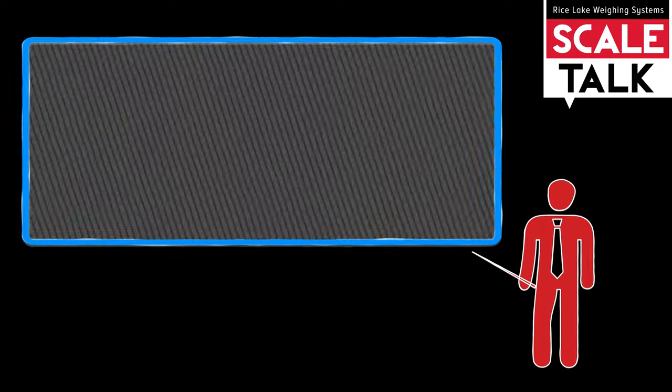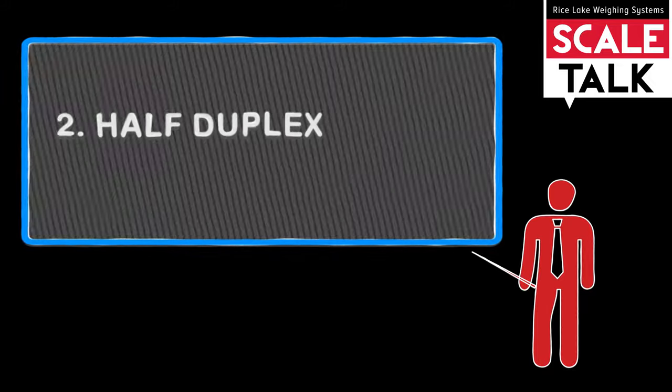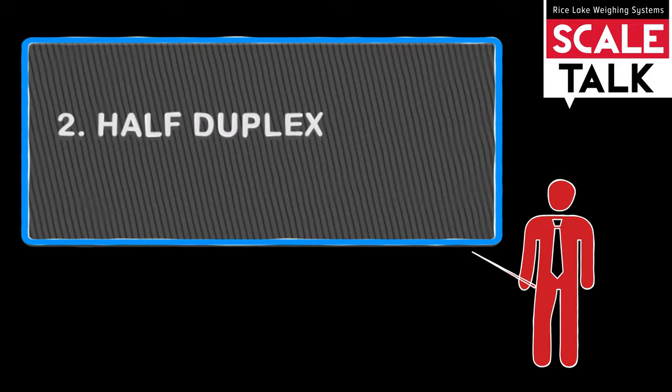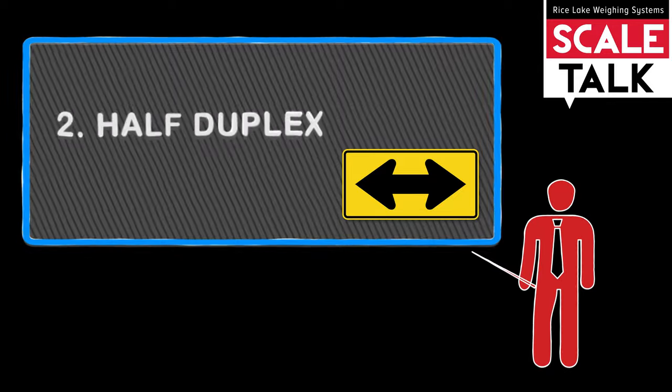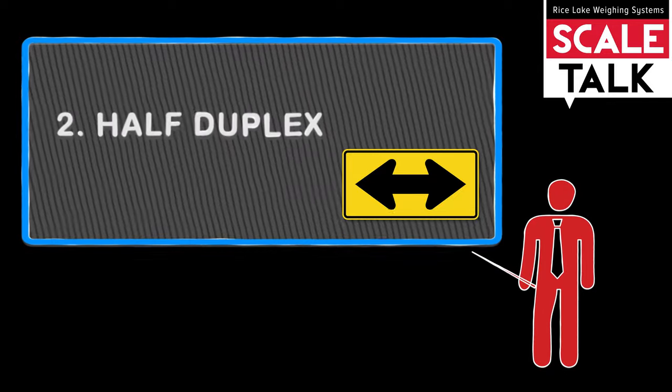The second type of communication is half-duplex. This method can send information in both directions, transmitting and receiving. However, the data can be sent in only one direction at a time.